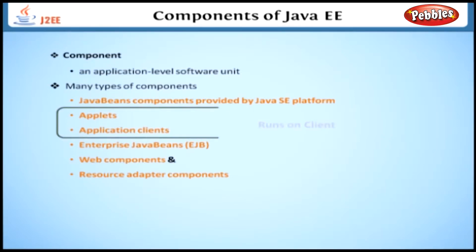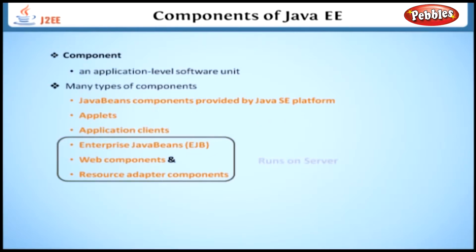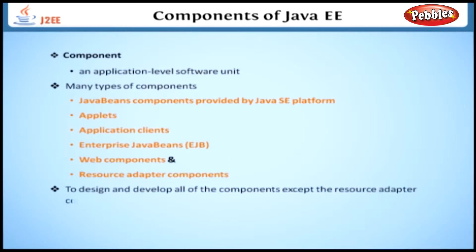Applets and Application Clients run on a client platform, while EJB, Web, and Resource Adapter components run on a server platform. As a developer, you have to design and develop all of the components except the Resource Adapter components, because it is provided by tool vendors.